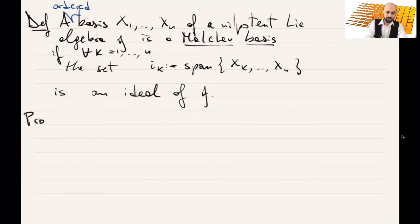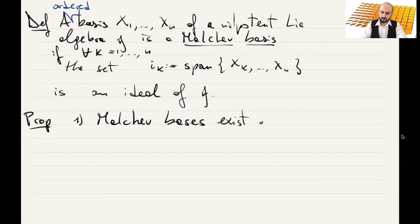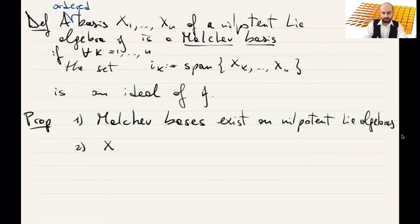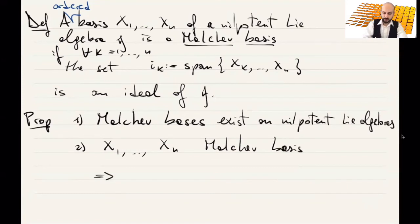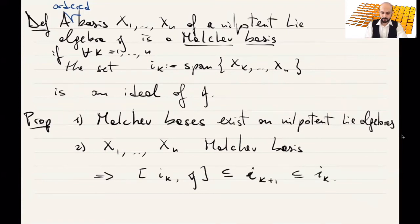So what we just proved is: first, a Malcev basis exists on nilpotent Lie algebras. And second, if you have a Malcev basis, then the ideal property is actually strengthened: the bracket [Iₖ, g] is contained in Iₖ₊₁, which of course is a subset of Iₖ.